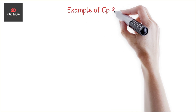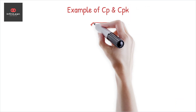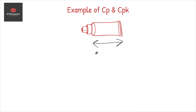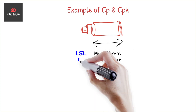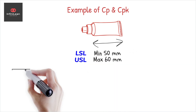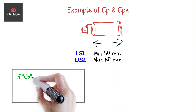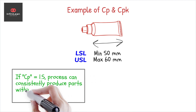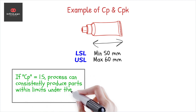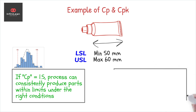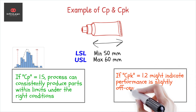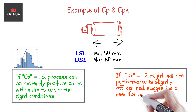Imagine you're manufacturing parts, and each part should be between 50 and 60 millimeters. If your CP is 1.5, your process can consistently produce parts within those limits under the right conditions. Meanwhile, a CPK of 1.2 might indicate that actual performance is slightly off-centered, suggesting a potential need for adjustment.